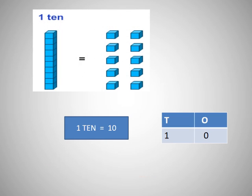Now children, in this picture you can see how many tens are there. Count it: one, two, three, four, five, six, seven, eight, nine, ten. So, it is one ten is equal to ten.